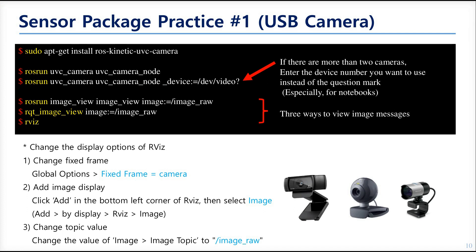Now let's test the camera package. If you have a laptop with a built-in camera, an extra USB camera might not be needed. Install the related package, then run the node. If you don't know the camera port number, check it by listing /dev/video*. You can find the number if the camera is properly connected.